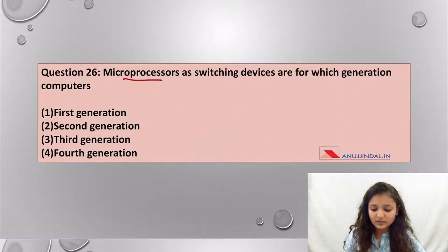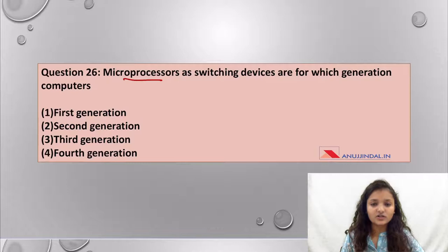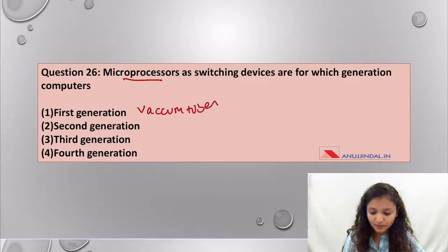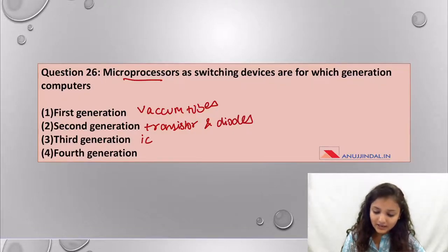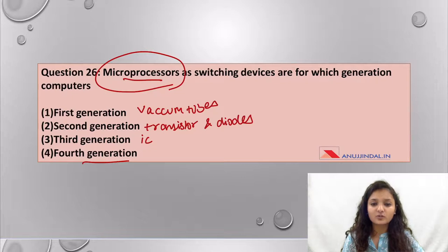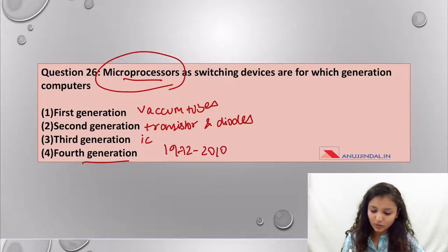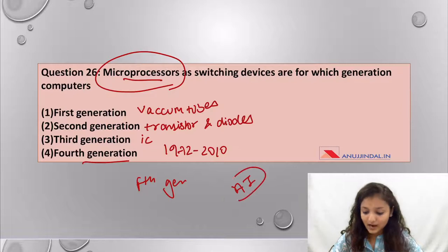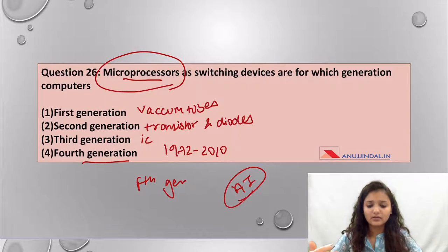The first question is: microprocessors as switching devices are for which generation computers? First generation computers use vacuum tubes, second generation use transistors and diodes, third generation computers use integrated circuits, and fourth generation computers use microprocessors. Fourth generation was from 1972 to 2010. Now it is fifth generation computers which involves artificial intelligence, so technology is booming.